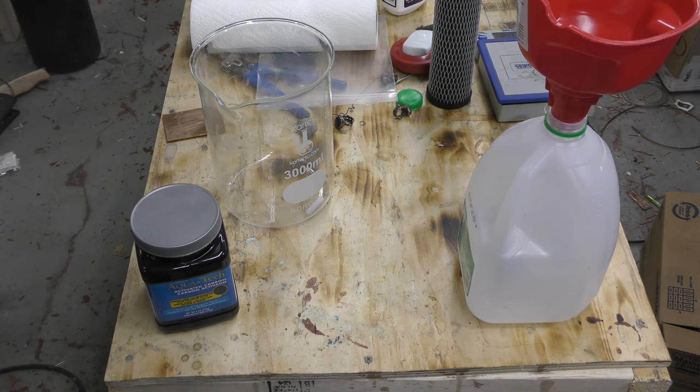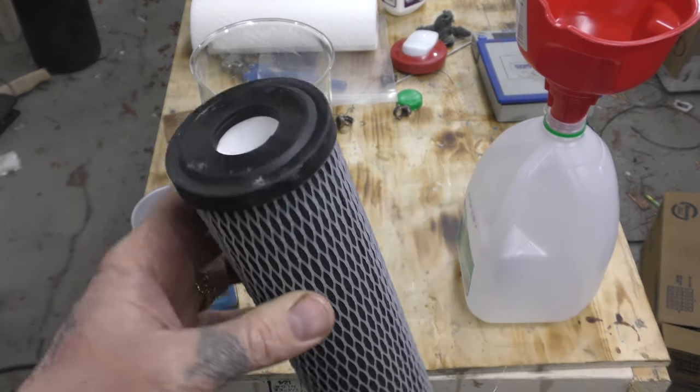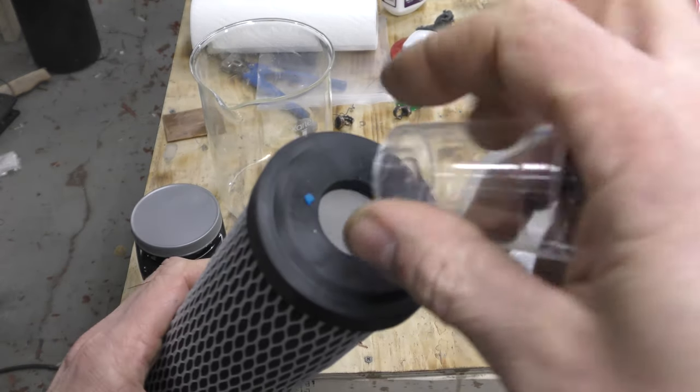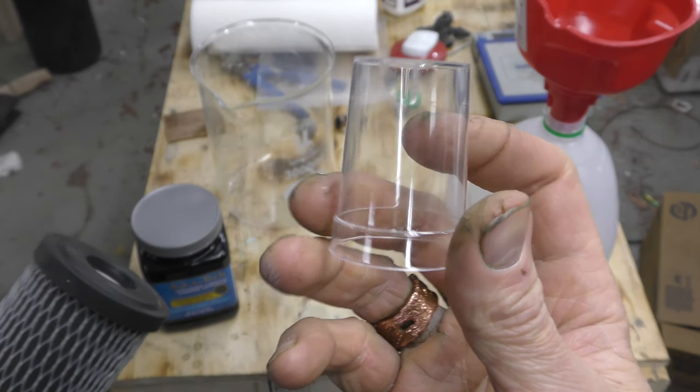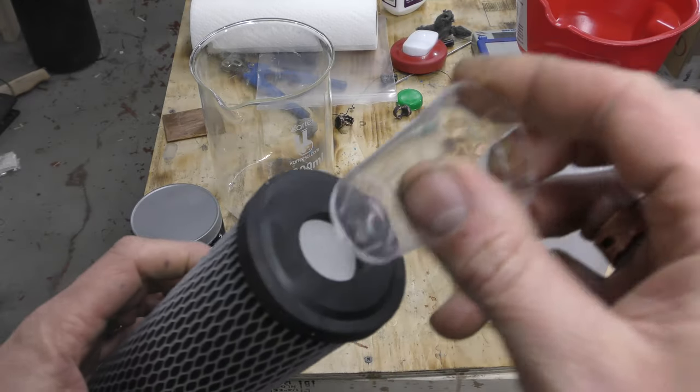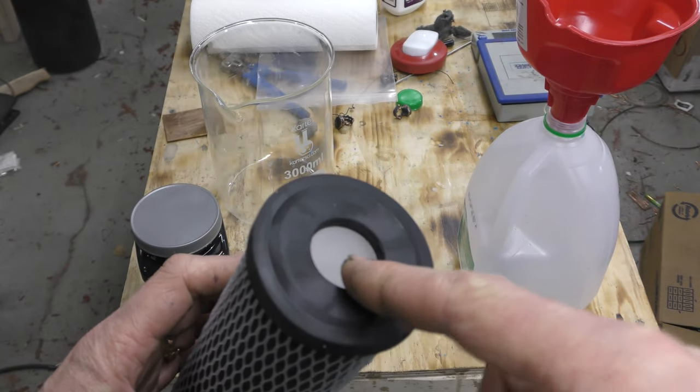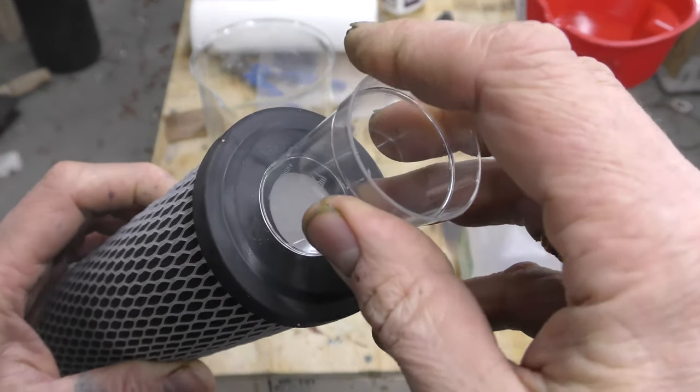I'm going to show you a different way to do this. This is a whole house filter you can get at any hardware store - a 5 micron carbon filter that has a hole on the bottom. All you do is find a plastic shot glass or glass shot glass to cover this hole.